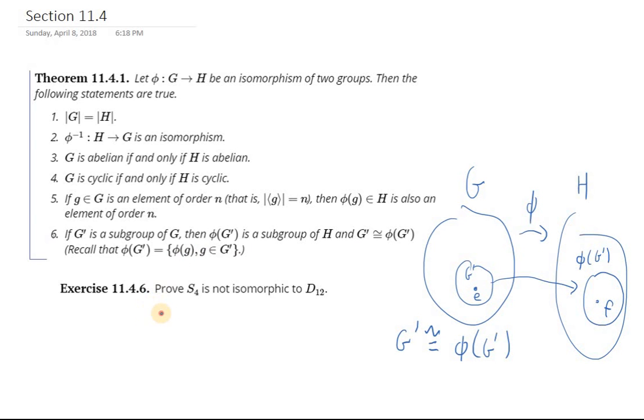You can look at S4 and D12, and think about the elements or the subgroups of these two groups, and compare them, and show that they can't possibly match up. Use some of these conditions. You can check through one by one and see which conditions they don't satisfy. That's the way to go ahead and show that these are not isomorphic.